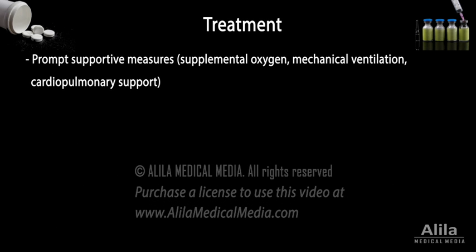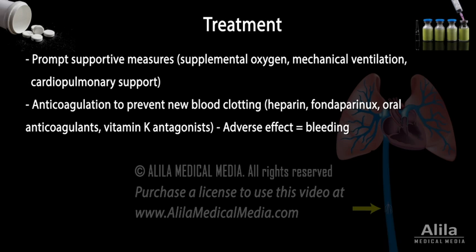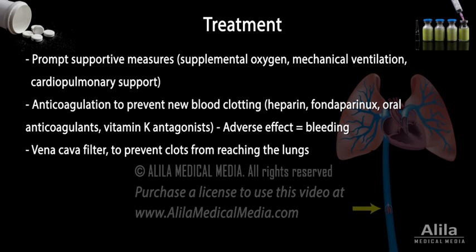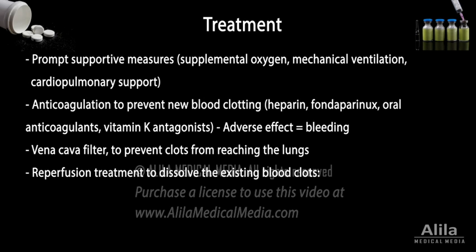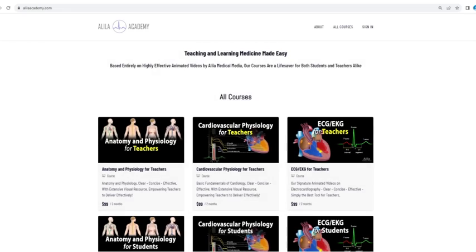Treatment typically includes prompt supportive measures and anticoagulation to prevent new blood clotting. Anticoagulation may be initiated even before definitive diagnosis in patients with a high clinical suspicion. Patients with contraindication to anticoagulants may need a filter placed in the body's major vein, the vena cava, to prevent clots from reaching the lungs. Hemodynamically unstable patients may require reperfusion treatment to dissolve the existing blood clots quickly, typically done with clot-busting medications given intravenously, a procedure known as thrombolysis. Patients with contraindication to thrombolysis may require surgical removal of blood clots.